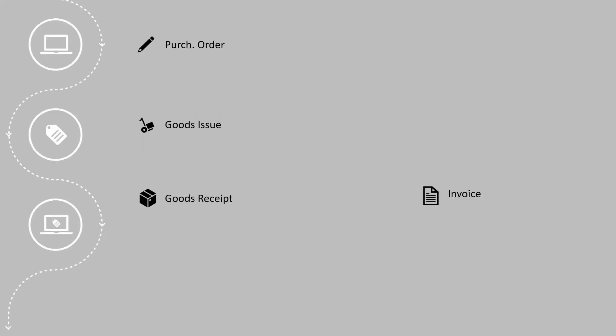Now let us see how this subcontracting process impacts the FI module. When we create a purchase order, we do not have any accounting impact. And once the goods are issued to the subcontracting vendor from the manufacturer's inventory, only the goods are transferred but there is no actual accounting impact. The accounting will start impacting from the goods receipt process.